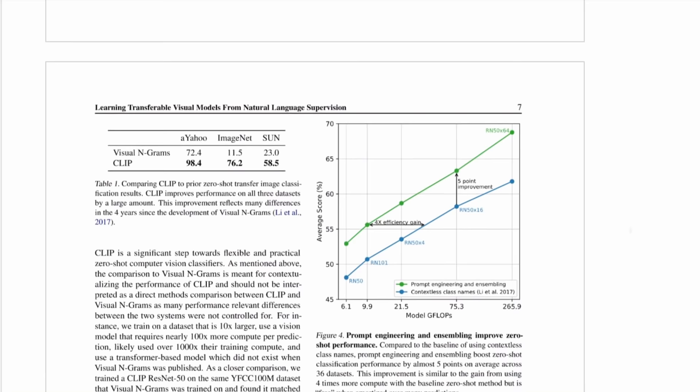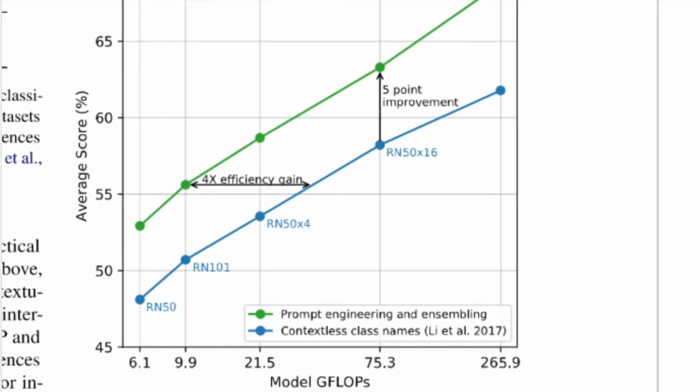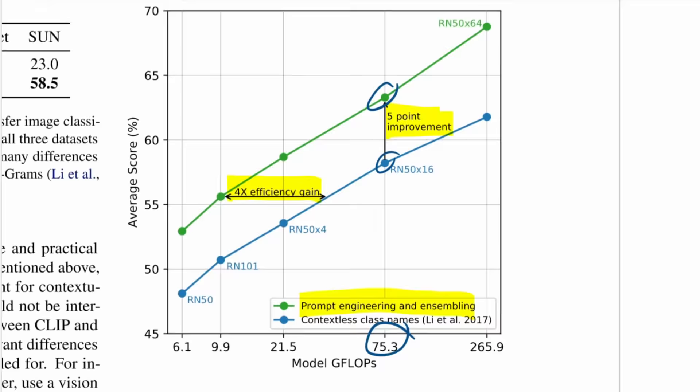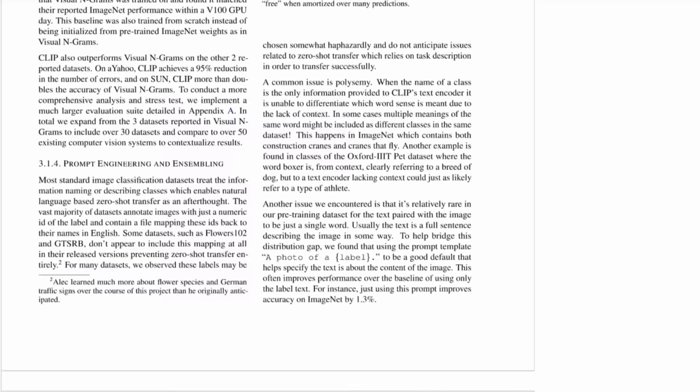They also do prompt ensembling. You have to engineer these prompts, and you can engineer better prompts to gain performance. You can also ensemble over prompts — and you can see that gives both an efficiency gain if you want to stay at the same performance, and also a performance improvement for the same compute with the same model. The corresponding dots are the same model, that's why they have the same compute.